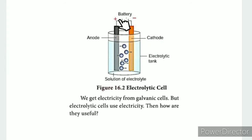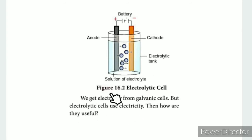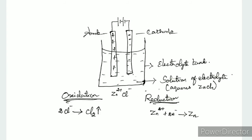We get electricity from galvanic cells, but electrolytic cells use electricity. The current is produced by the galvanic cell through a chemical reaction. The electrolytic cell uses an external current supply. There is an electrolytic solution used in this setup.